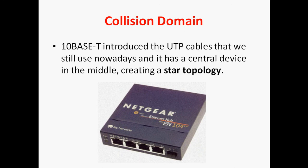10Base-T introduced UTP cable — unshielded twisted pair cable — which we still use nowadays, and it has a central device in the middle called star topology. Before hub, we were using bus topology with 10Base-2 and 10Base-5 standards. Once 10Base-T was introduced, that was a big change. Using 10Base-T, we can use UTP cable and a central device called hub, connected as star topology.